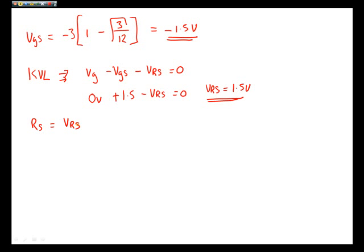RS is equal to VRS divided by IDS, which is equal to 1.5 volts divided by 3 milliamps, which equals 500 ohms. We've found our first component. We can now calculate RD.